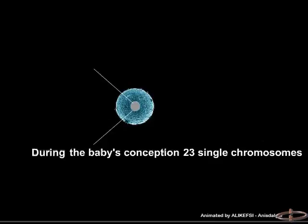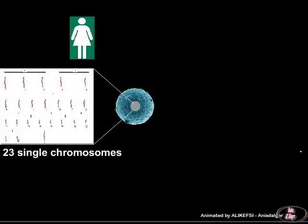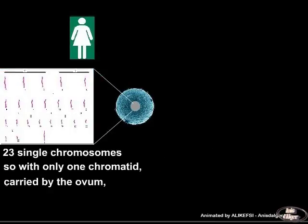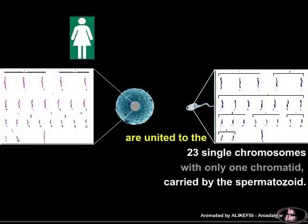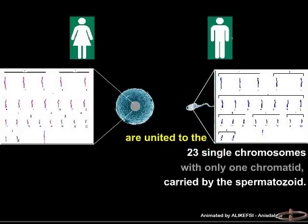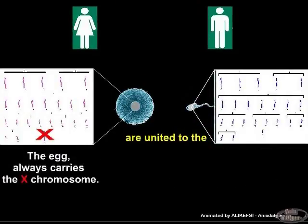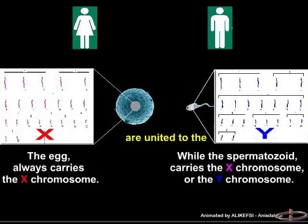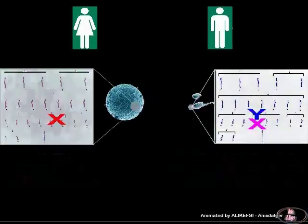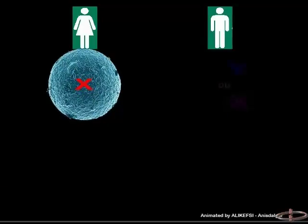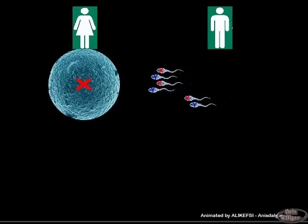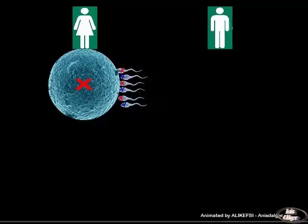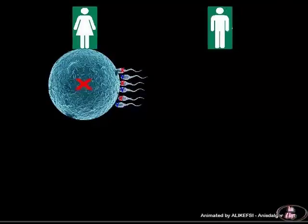During the baby's conception, 23 single chromosomes — with only one chromatid — carried by the ovum, are united to the 23 single chromosomes carried by the spermatozoid. The egg always carries the X chromosome, while the spermatozoid carries either the X chromosome or the Y chromosome. Just before fertilization, thousands of sperm reach the egg and each will try to penetrate it to fertilize it.